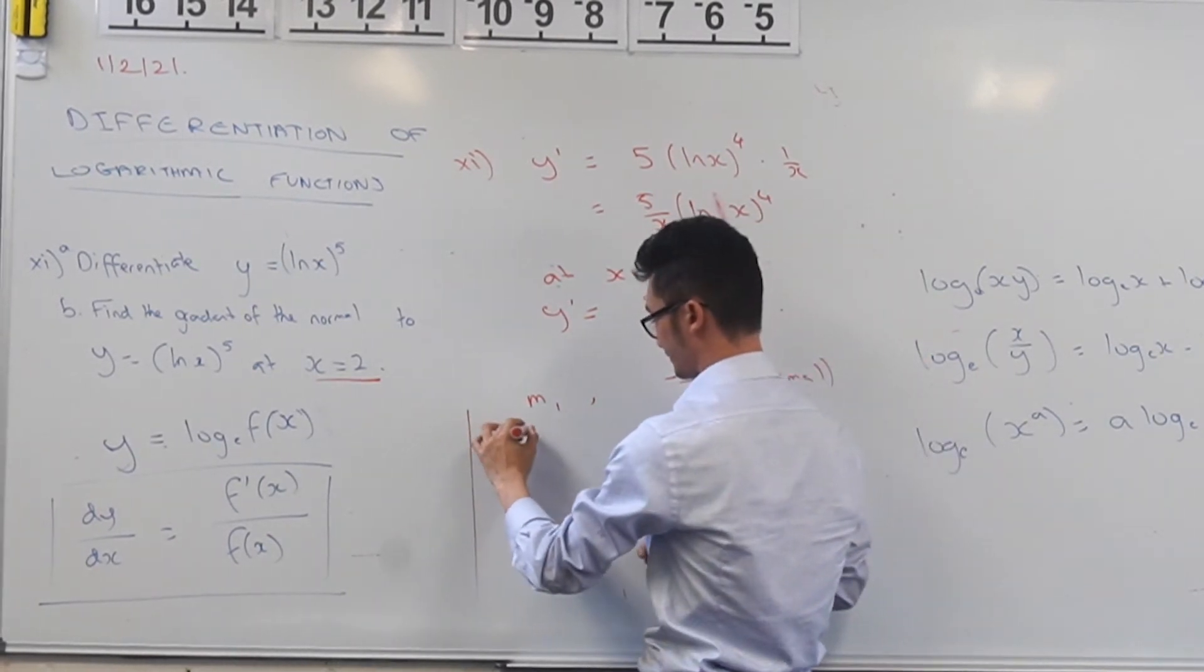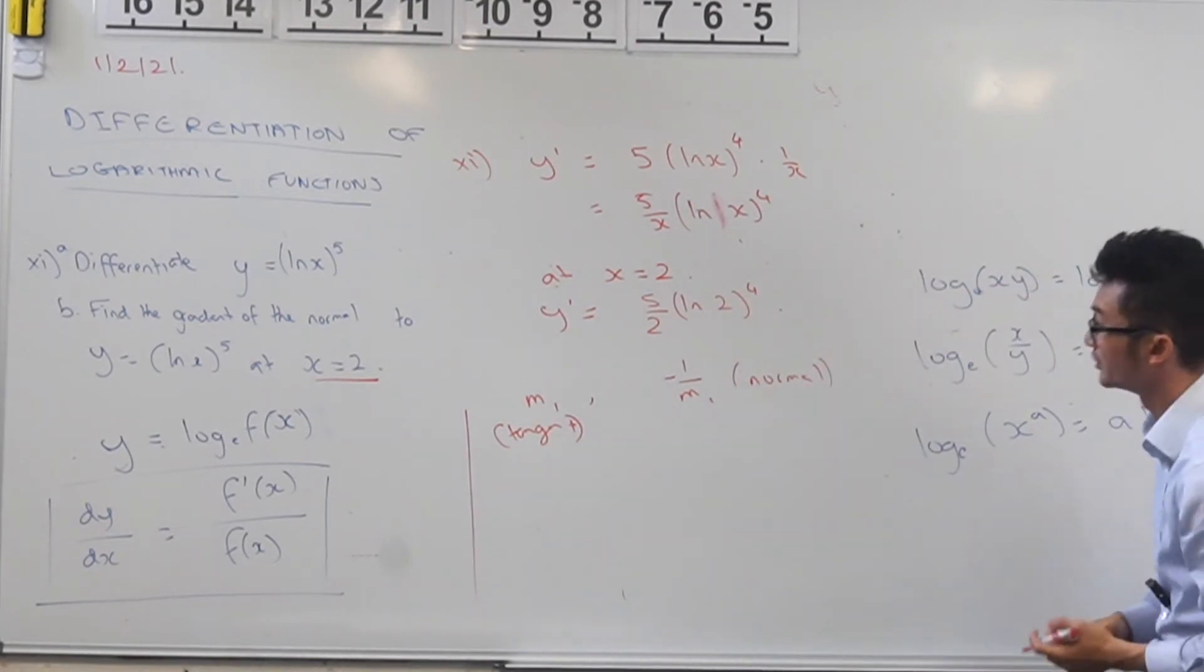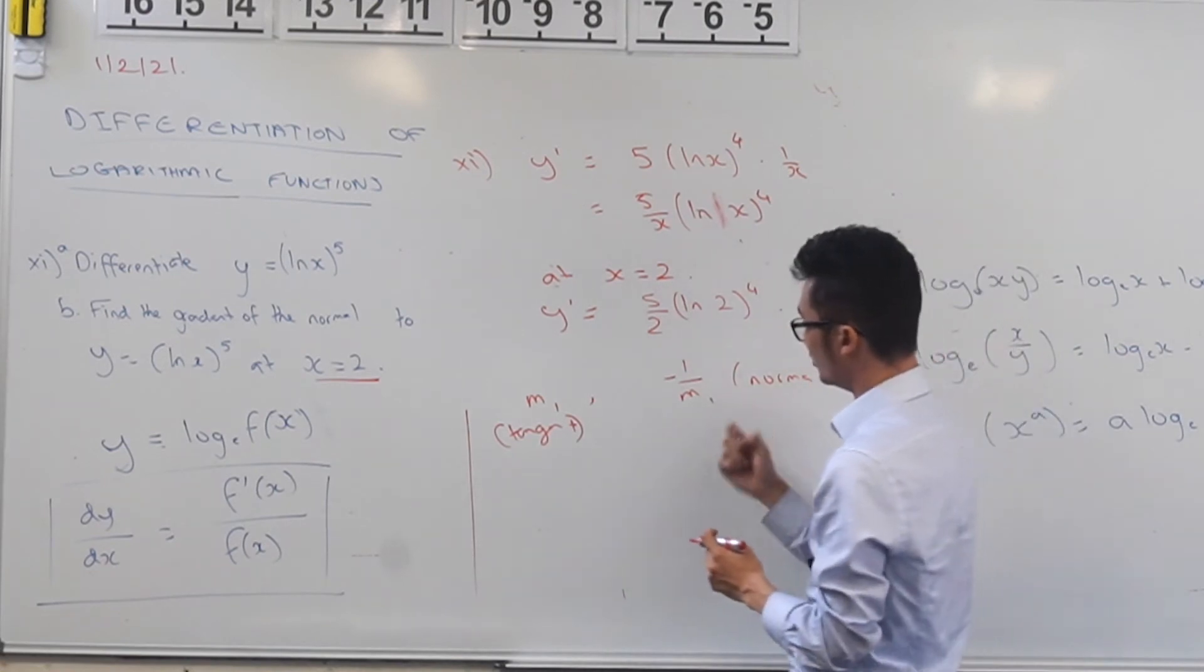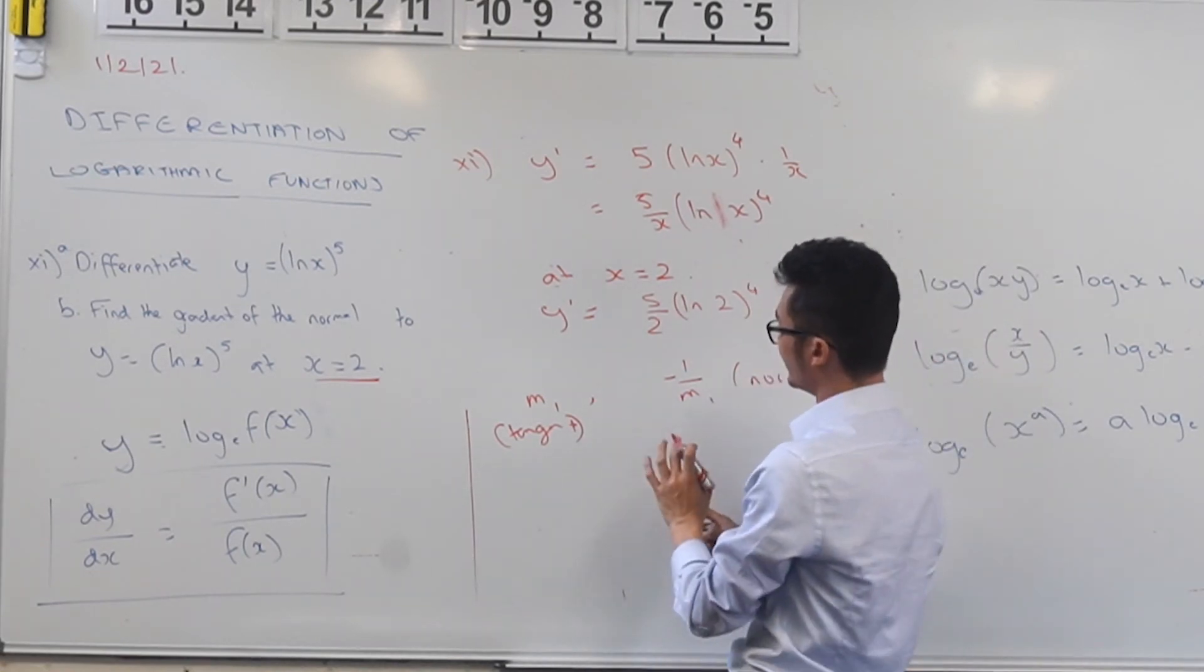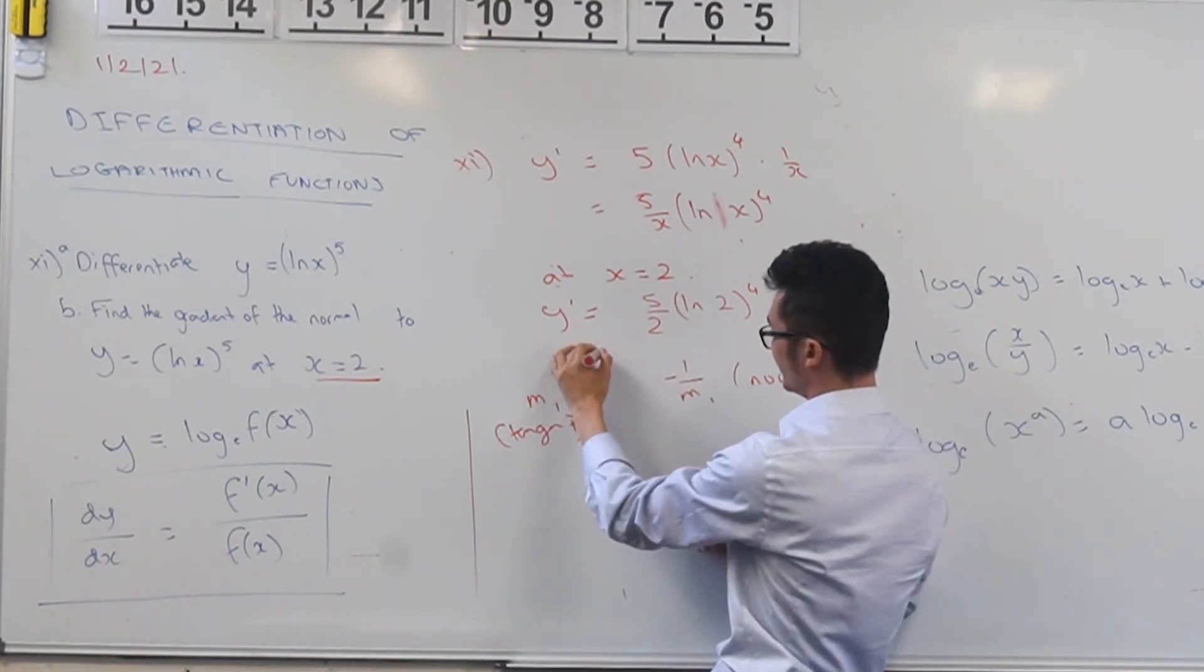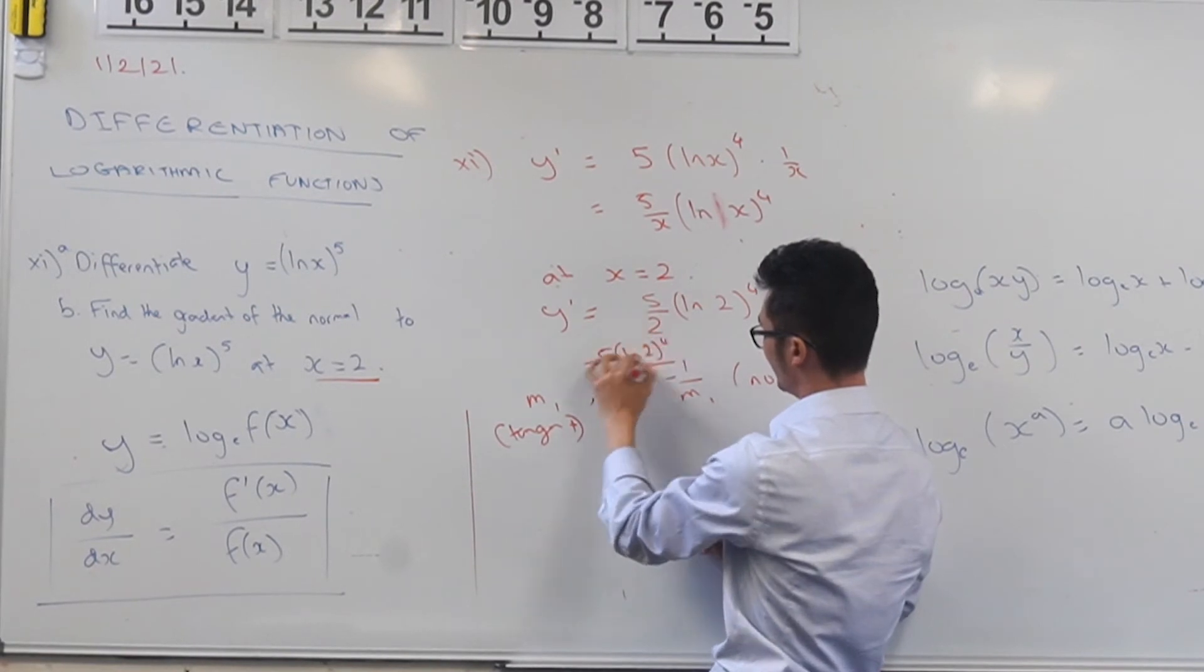And so I guess the question is, okay, what's the negative reciprocal of this? That's m1, my tangent, right? So to find my normal, what I need to do is say, okay, can I take the negative reciprocal of this? If you rewrite this just a little bit differently, you put 5 over ln 2 to the power of 4.